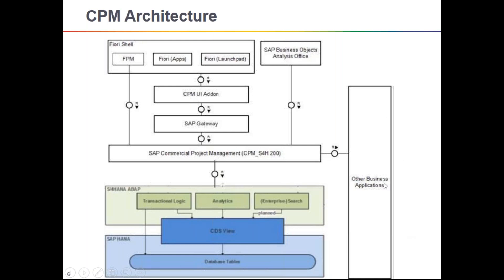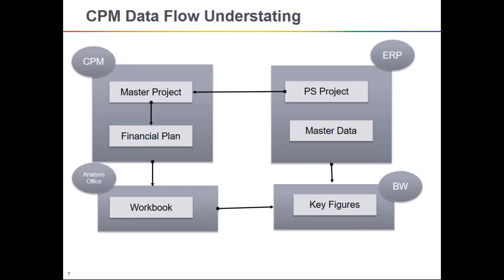This diagram is to understand how data is flowing, not exactly how systems are connected. I'll explain in my own words how data flows exactly within CPM — this is the CPM data flow, understanding how the system communicates data between different systems.